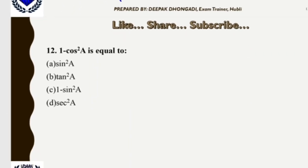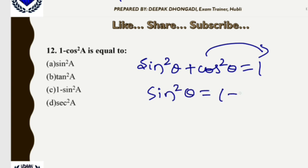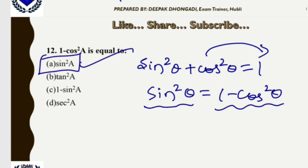Question 12: Using the standard identity sin²θ + cos²θ = 1, transferring cos²θ gives sin²θ = 1 − cos²θ. So the value of 1 − cos²θ is sin²θ. Option E is correct.